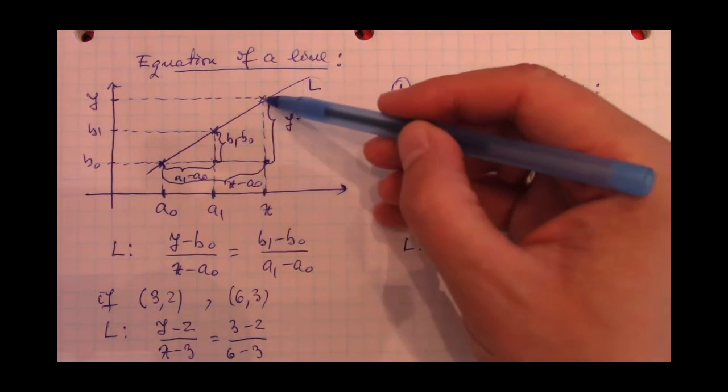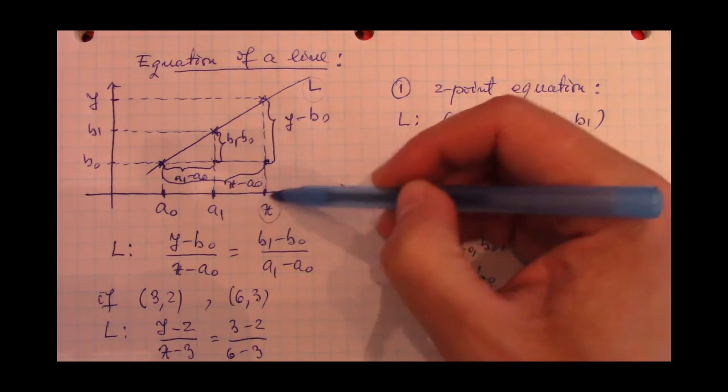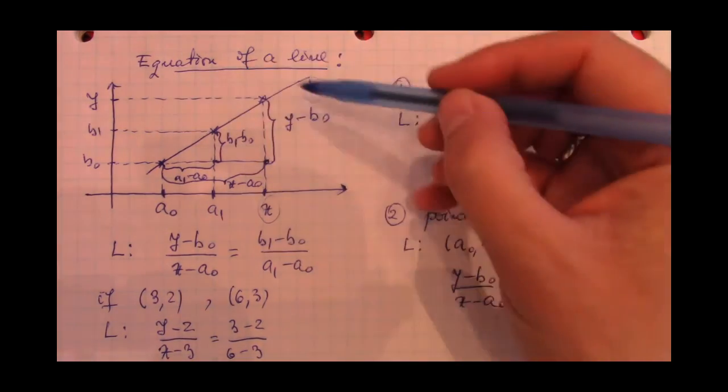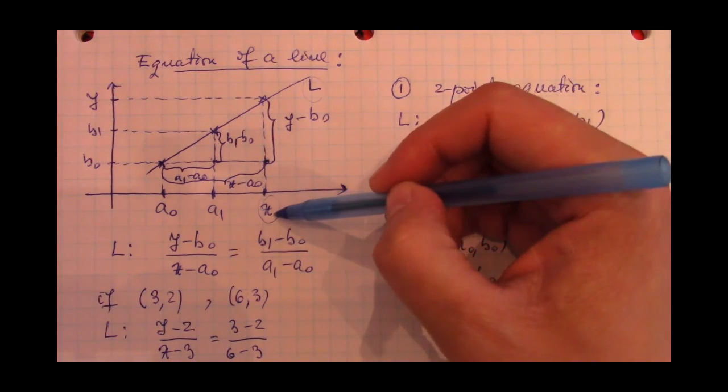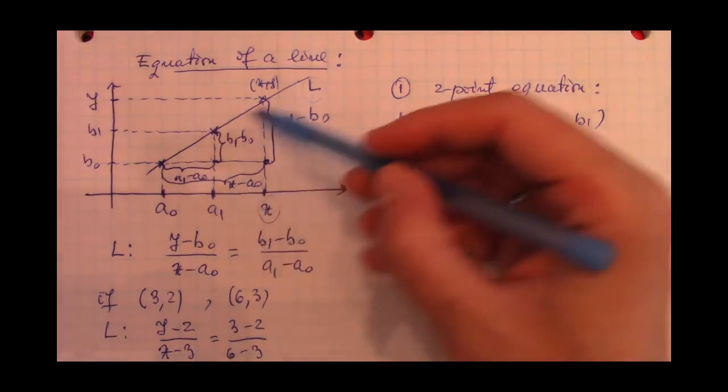And let's take a third point on the line whose coordinates are x and y. And we are going to refer to this point of coordinates x and y as a generic point on the line L.